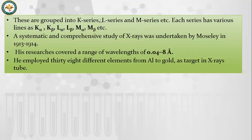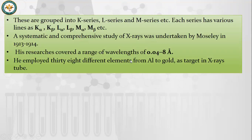The K-series is produced when a fast-moving electron knocks out an electron from the K-shell of any atom. If an electron is knocked from the K-shell, we call it the K-series; if from the L-shell, we call it the L-series. X-ray spectroscopy was carried out by Moseley using approximately 38 different elements ranging from aluminum to gold. These X-rays have a range of 0.04 to 8 Angstroms.